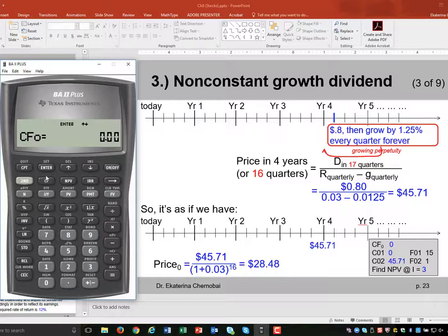Start by pressing the cash flow button. Cash flow zero, there is nothing, no dividend that you would receive right away when you buy the share. So you save it as zero by pressing enter and then you press the down arrow key. Cash flow zero equals zero. What's cash flow one?